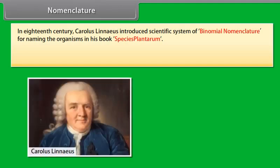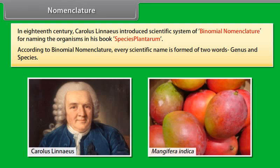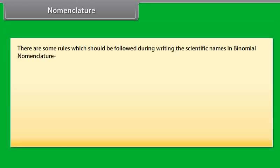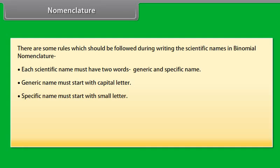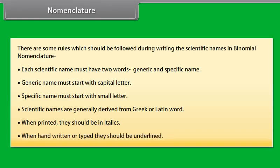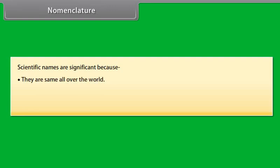In the 18th century, Carolus Linnaeus introduced the scientific system of binomial nomenclature for naming organisms in his book Species Plantarum. According to binomial nomenclature, every scientific name is formed of two words: genus and species. Each scientific name must have two words — a generic name and a specific name. The generic name must start with a capital letter and the specific name with a small letter. Scientific names are generally derived from Greek or Latin words. When printed, they should be in italics; when handwritten or typed, they should be underlined. Scientific names are significant because they are the same all over the world, indicate evolutionary relationships, and solve the problem of multiple naming of one organism.